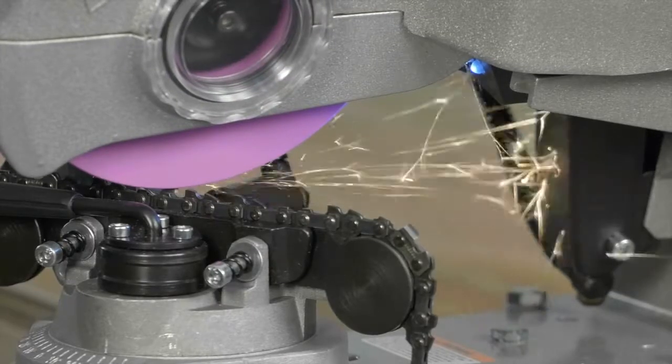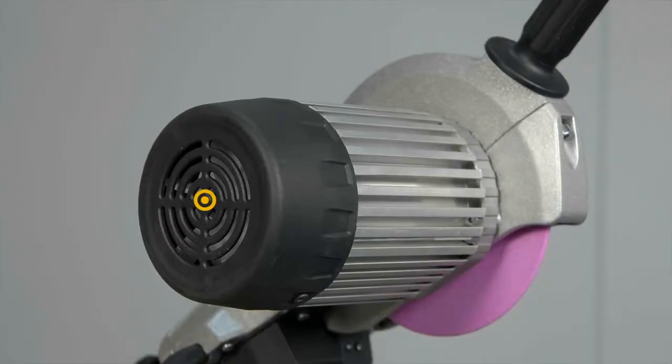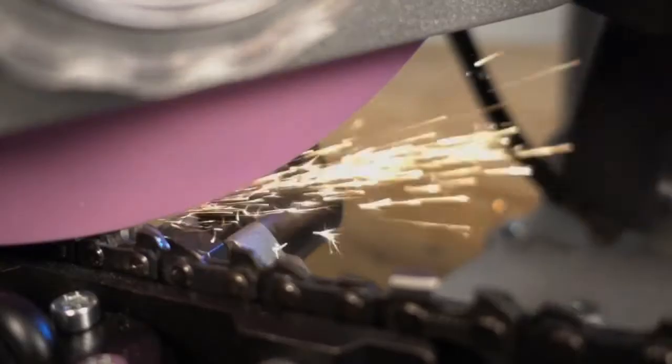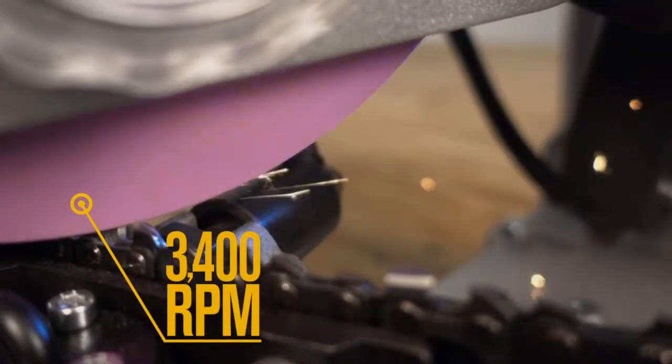Quickly sharpen chains with the powerful commercial grade 300 watt, 120 volt, 60 hertz motor that delivers 3400 RPM grinding speed.